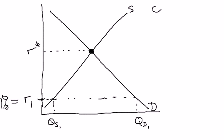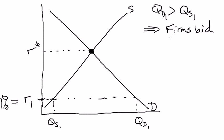Since quantity demanded 1 is greater than quantity supplied 1 — i.e., a shortage exists — that's going to lead some firms to bid up the real interest rate. So we now know the real interest rate is going to start to rise. This increase in the real interest rate is going to do two things.